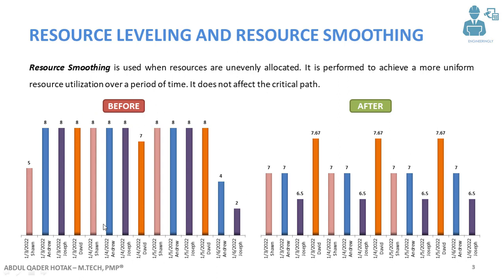Sean is working five hours here, eight hours here, and eight hours here. In resource smoothing, what we do is deduct one hour from the eight-hour days, which will result in seven hours of work here, seven hours here, and seven hours here.